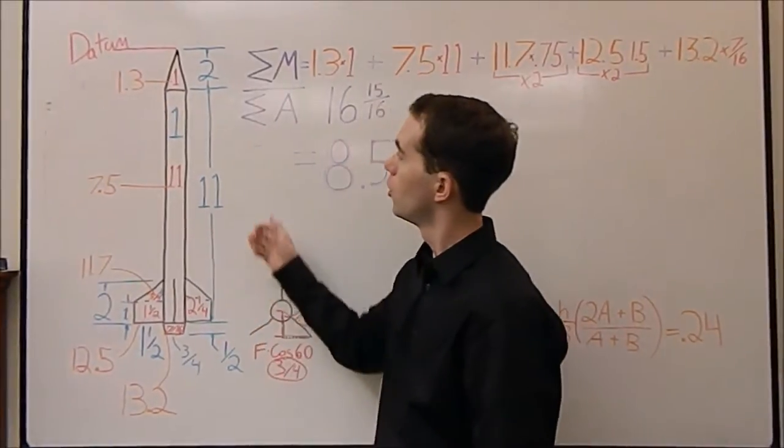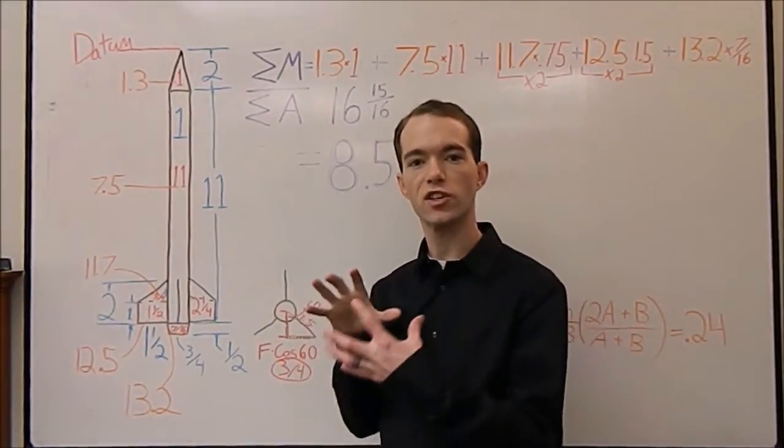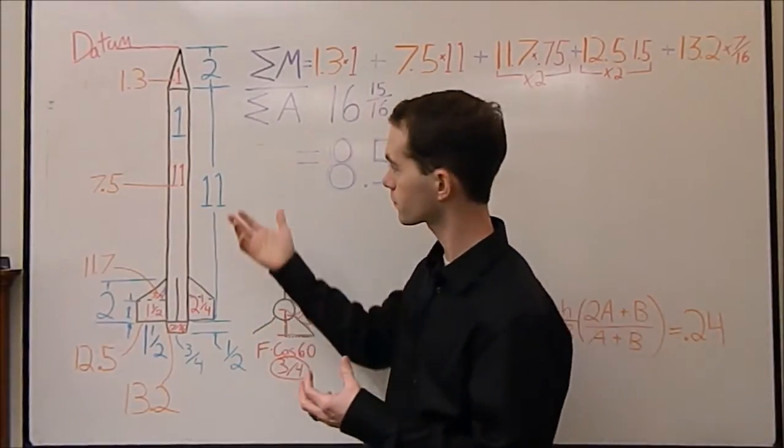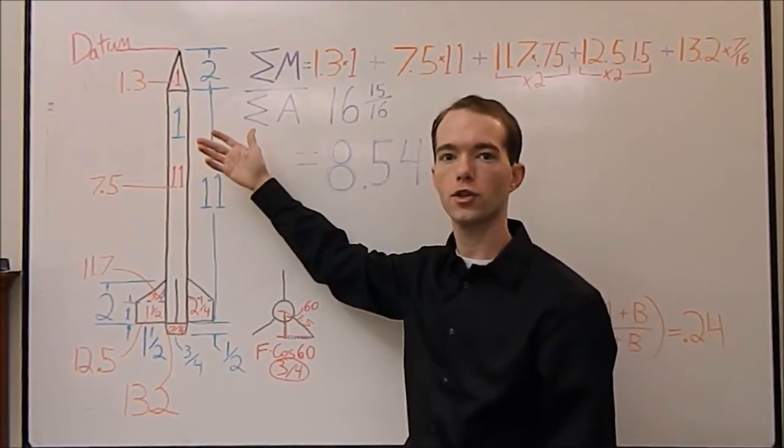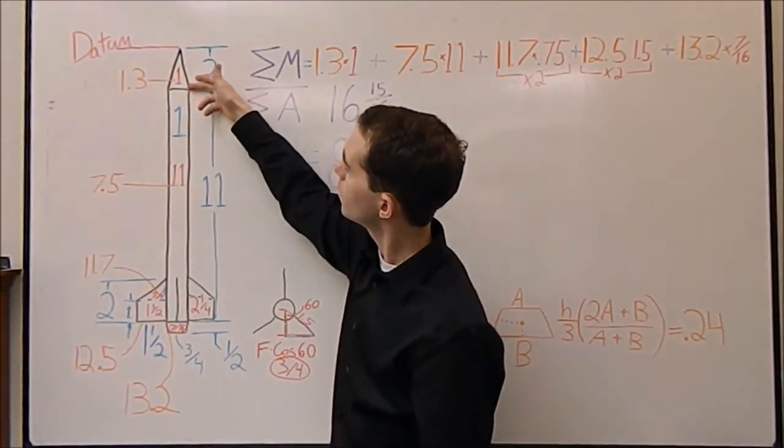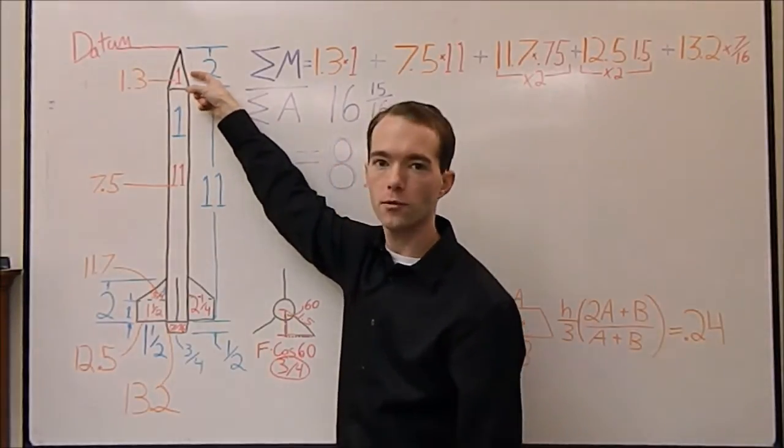Now, we've got all our areas. We have to find where the center, the geometric center of all those areas lies, so that we can calculate the centroid of the whole thing. Well, there's tables online. Wikipedia has a bunch of list of centroids if you just look that up. For any triangle, the centroid is 1/3 of the way up from its base.